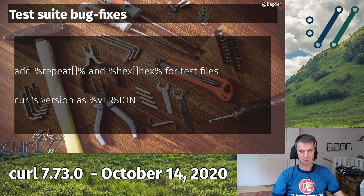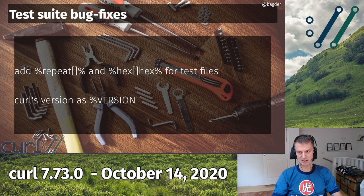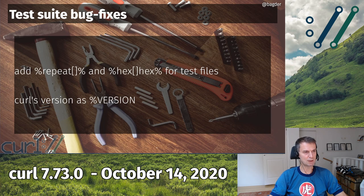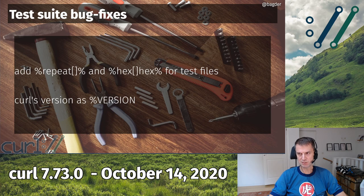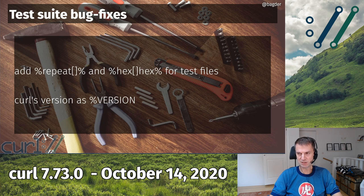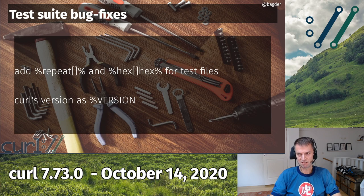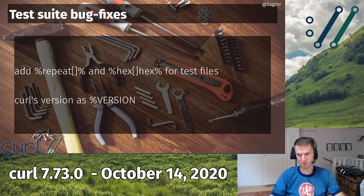We fixed the test suite in several ways. I introduced pre-processing of test files a few versions ago, and now I've added macros like 'repeat' — if you want to generate one megabyte of content you can just say repeat 'hello' 100,000 times instead of storing one megabyte in the test file. This reduced the size of many test files significantly. I also introduced a 'hex' macro that lets you specify binary data as hex instead of inserting real binary in test files, making them easier to read and transfer.